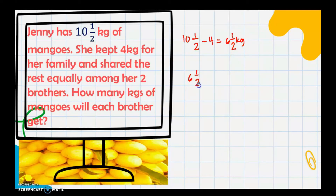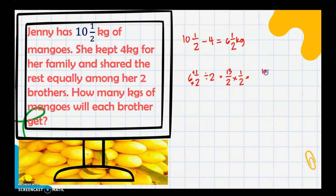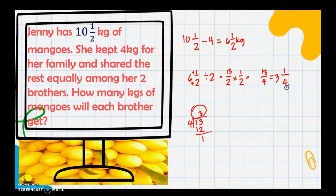Now divide 6 and 1/2 among her two brothers. Convert the mixed number to an improper fraction: 6 and 1/2 = 13/2. Get the reciprocal of 2, which is 1/2. Multiply: 13 × 1 = 13 and 2 × 2 = 4, giving 13/4. Since 13 ÷ 4 = 3 remainder 1, the answer is 3 and 1/4. Therefore, each brother will get 3 and 1/4 kilograms of mangoes.